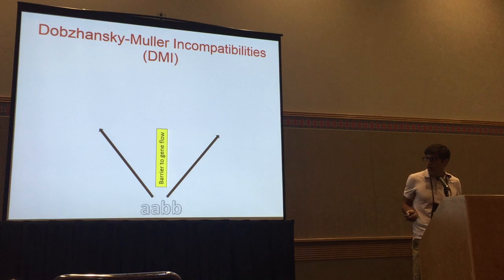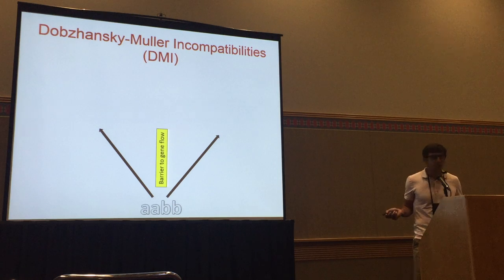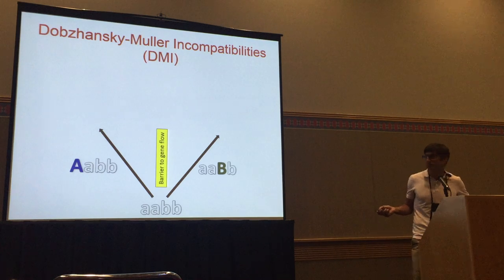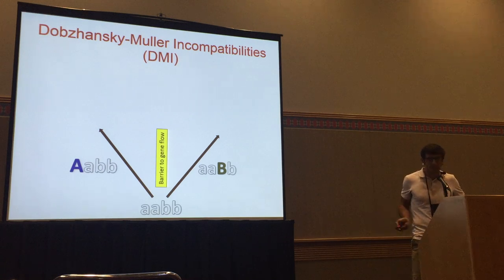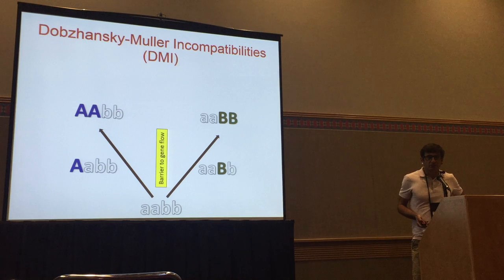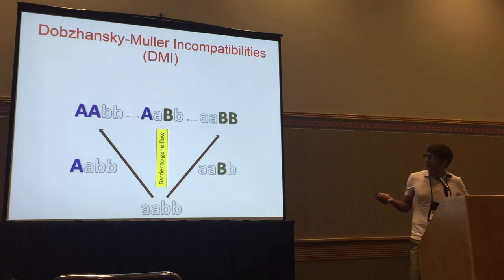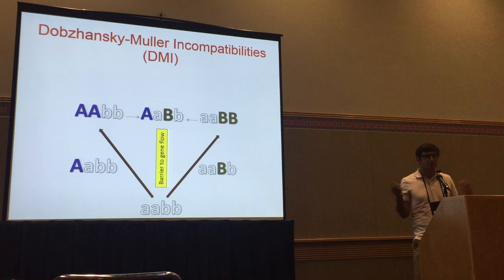The causes for these hybrid problems are usually because of the evolution of Dobzhansky-Muller incompatibilities. These are incompatibilities between two or more loci. In the ancestral population, you have the little A and little B alleles, and then as they separate, you get a big A allele in one population that works well with any of the ancestral alleles. In the other population, you get a big B allele that also works well with the ancestral alleles. They go to fixation in each population, and when these populations hybridize, these derived alleles have never been tested together in the same genomic background, and they may not work together.